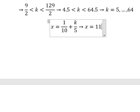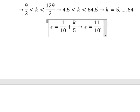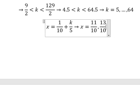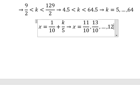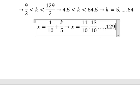So we have 11 over 10. The next one is about number 6, so that is about 13 over 10 until the next one, that is about 129 over 10.